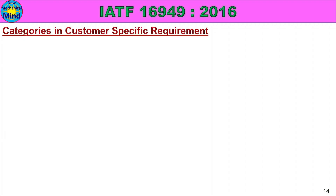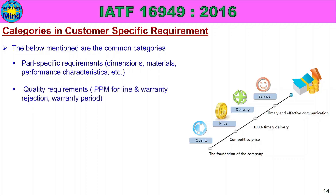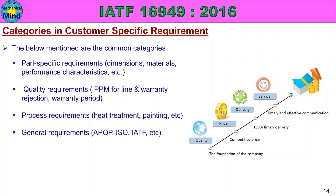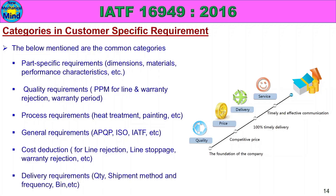Next, we will see the categories in Customer Specific Requirements. The common categories include delivery requirements, quantity, shipment method and frequency, and other related items. These are all Customer Specific Requirements categories.